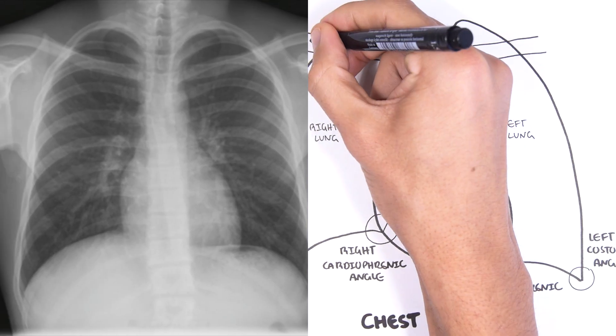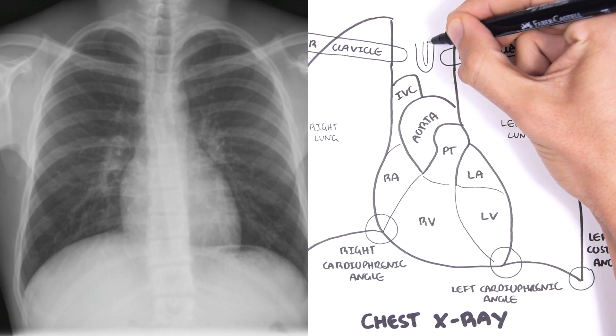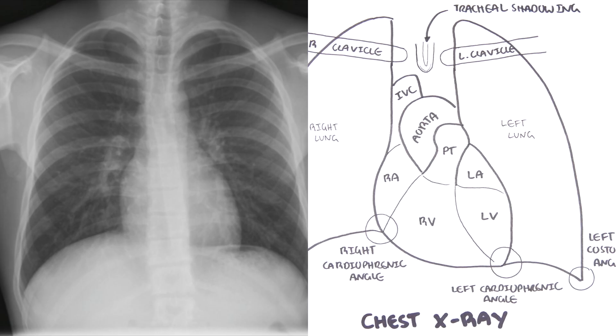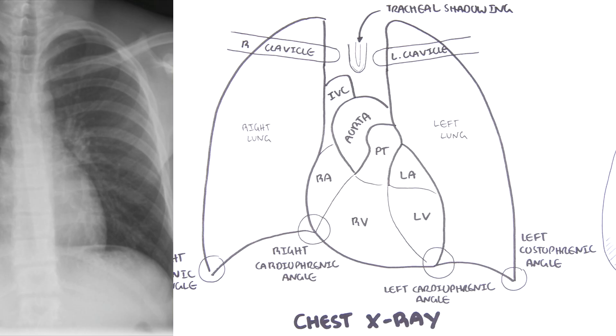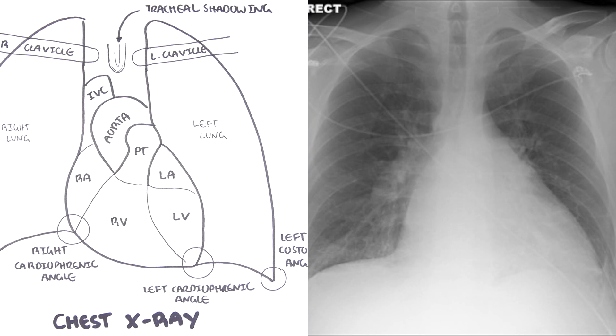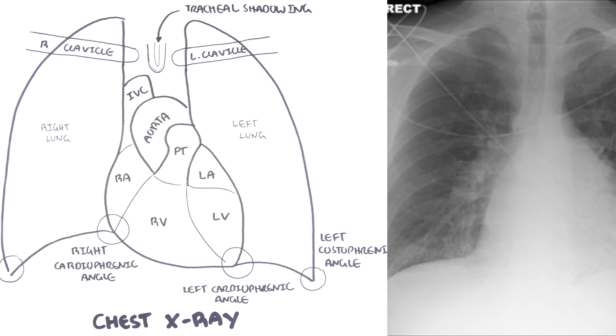Another important landmark is your right and left clavicles, and in the middle you can see the tracheal shadow. Deviation of the tracheal shadow to the left or right can signify a tension pneumothorax. This diagram represents a normal chest X-ray, and it's important to compare it to an abnormal one — such as this chest X-ray of someone with heart failure. The heart is enlarged, occupying more than 50% of the cardiothoracic ratio, and you can see blunting of the cardiophrenic and costophrenic angles.